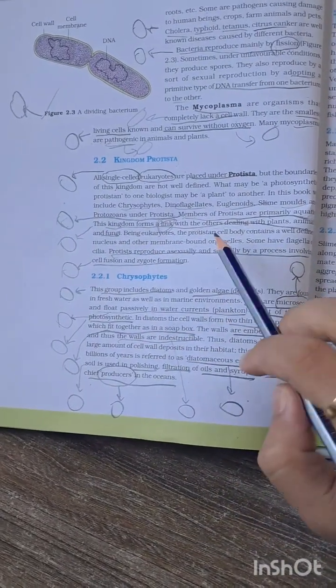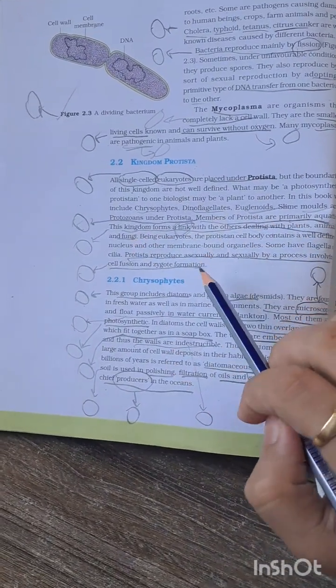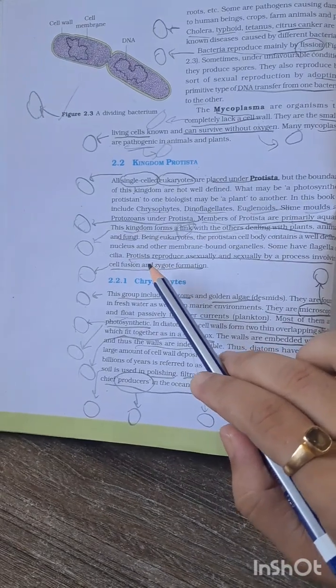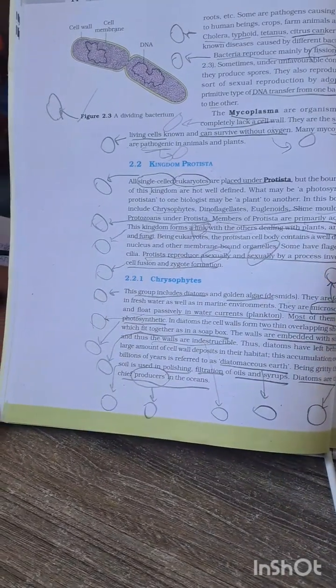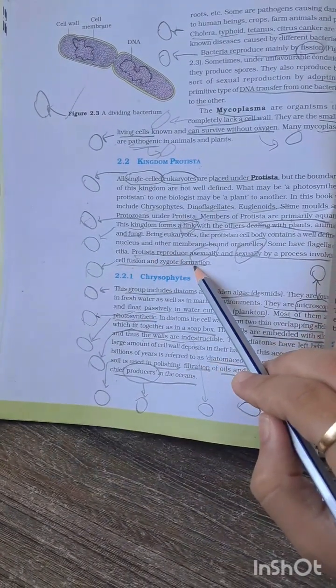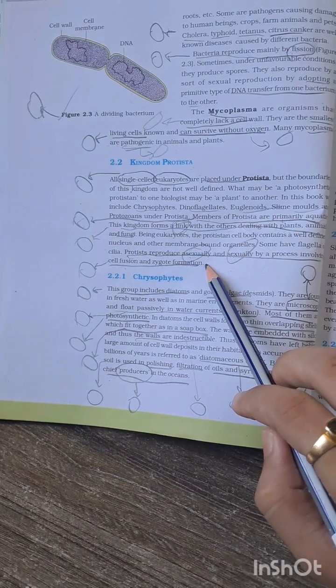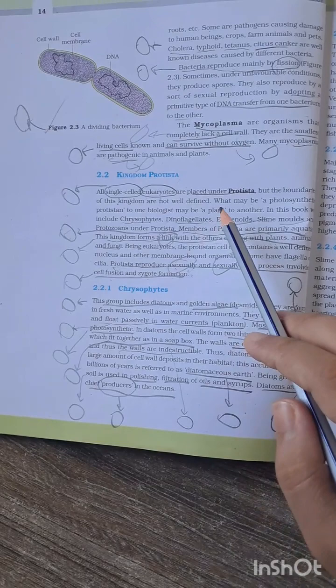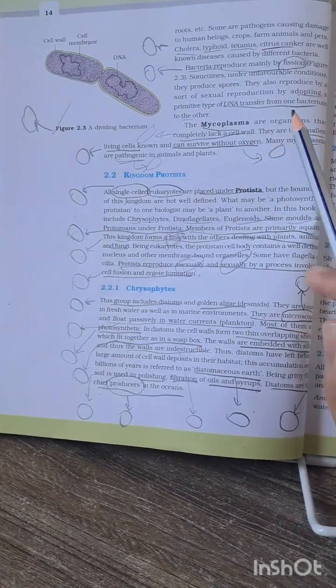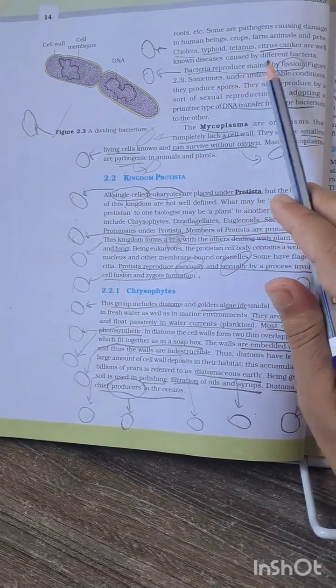Another probable MCQ from this page is that protists reproduce asexually and sexually by a process involving cell fusion and zygote formation. You have to be very clear about this line because in the previous video I said that bacteria reproduce by fission.